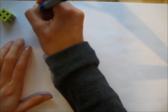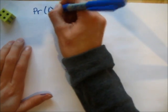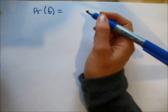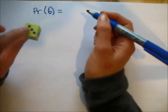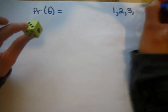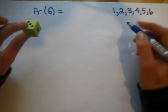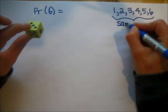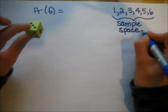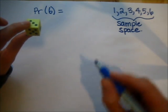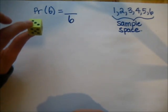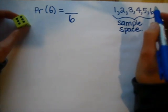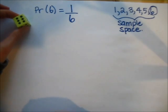Let's take a look at how we calculate probability, using a standard dice. What if we wanted to calculate the probability of rolling a certain number? We write it like this: the probability of getting a 6 is equal to... First, consider all the possible numbers we can roll on a dice: 1, 2, 3, 4, 5, or 6. This is called our sample space. When we calculate probability as a fraction, the denominator is all the different possible outcomes. Since a 6 is just one of those outcomes, the probability of getting a 6 is 1 sixth.